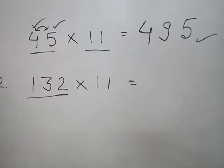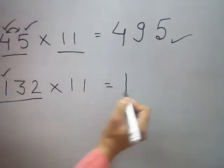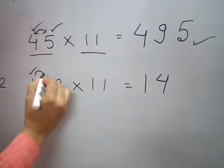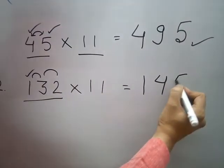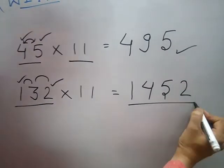Then for a 3-digit number: take 1 as it is, 1 plus 3 is 4, 3 plus 2 is 5, and last, 2 as it is. This is your answer.